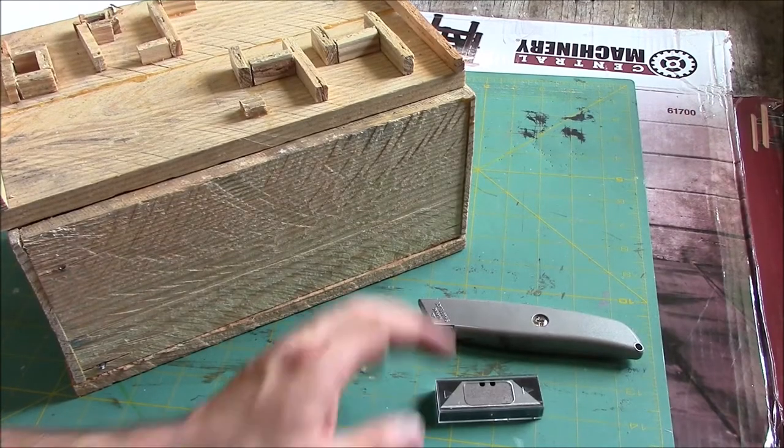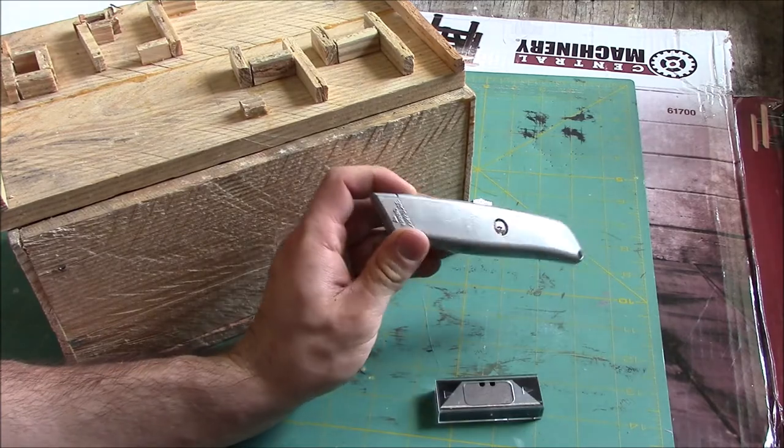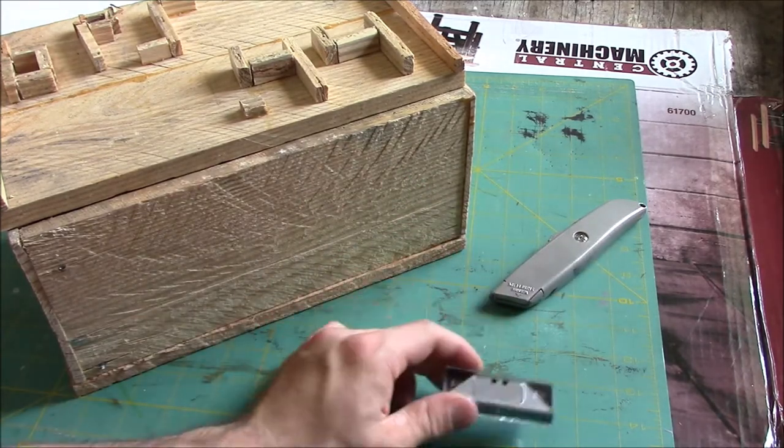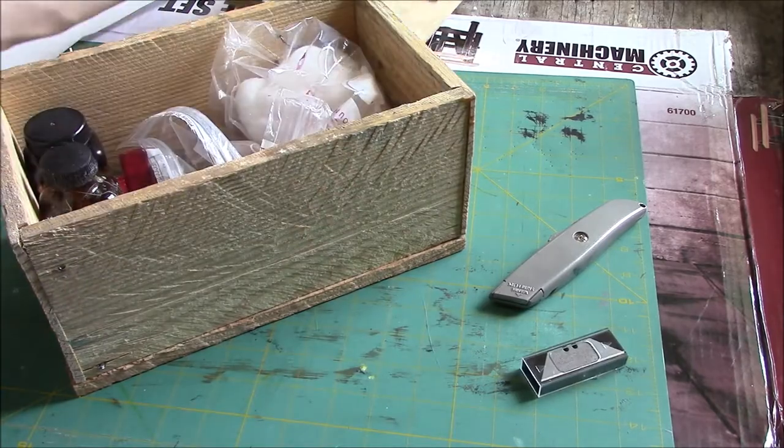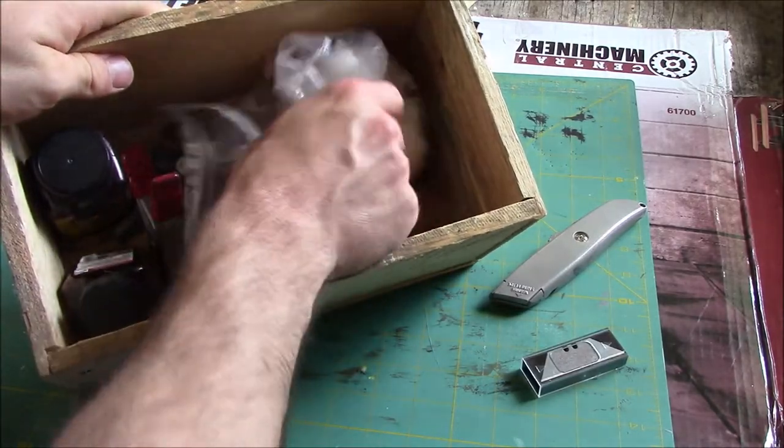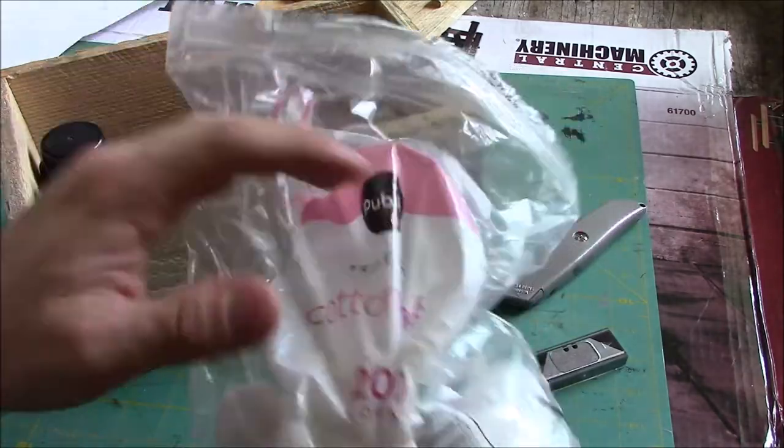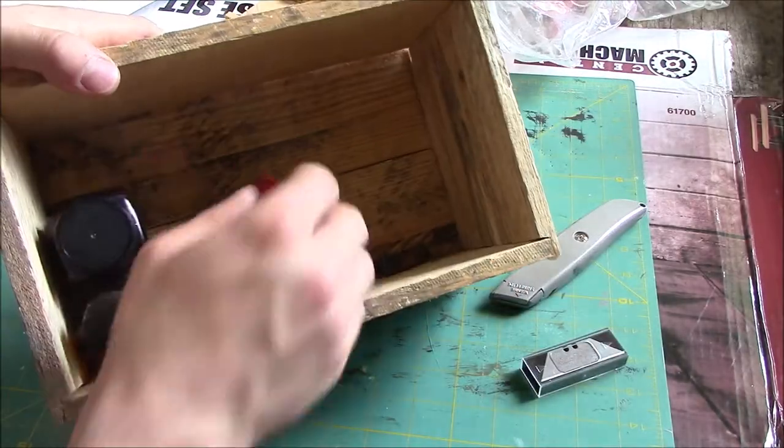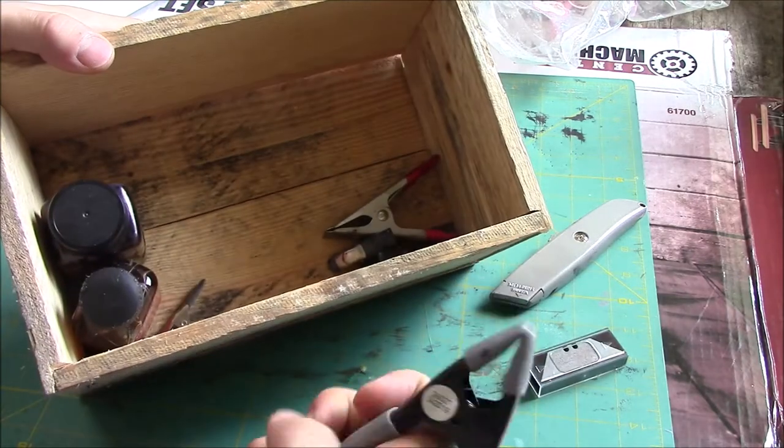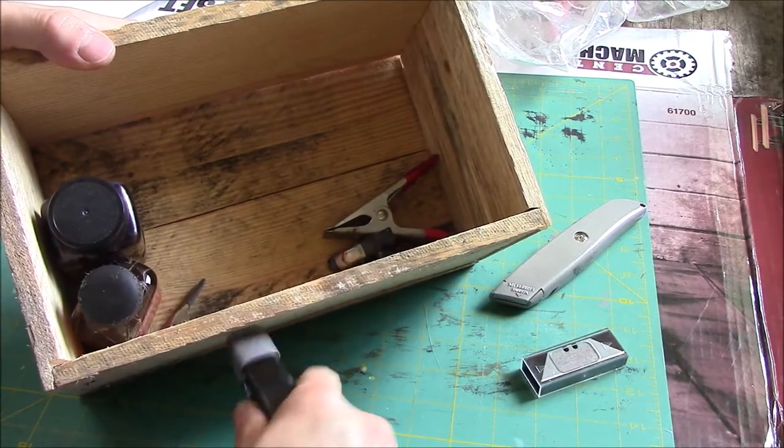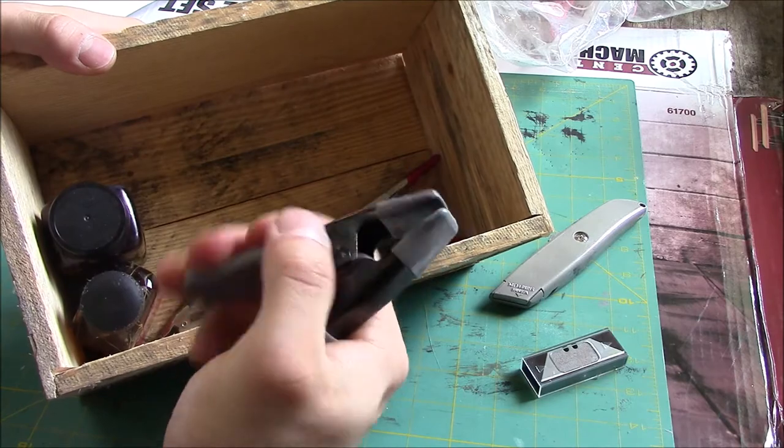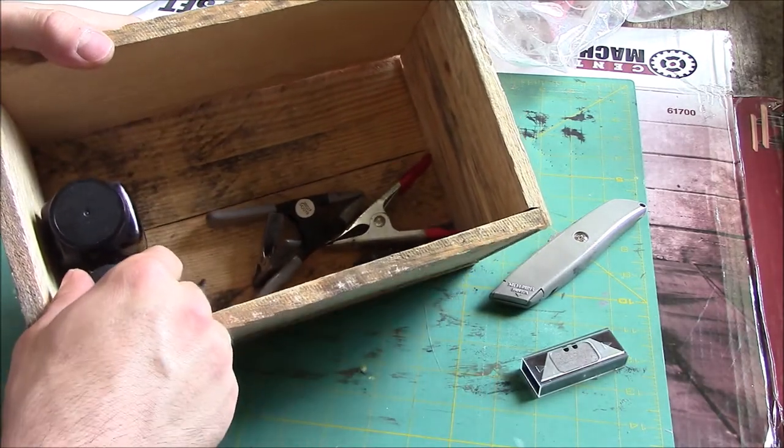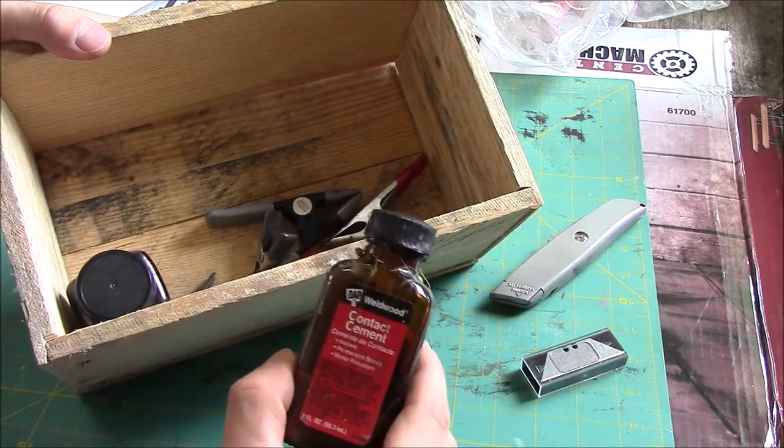So in order to make holsters you're gonna need a couple things. You're gonna need a box cutter. I picked this up at Harbor Freight for two bucks. Some extra blades, another two bucks. This box will last you a whole bunch of stuff. You're gonna need some cotton balls for applying dye and some of these spring clamps. Pick up three or four of these. You can even use some of these small ones. Pick up about four of those depending on the size of your holster. Contact cement. This stuff goes pretty far.